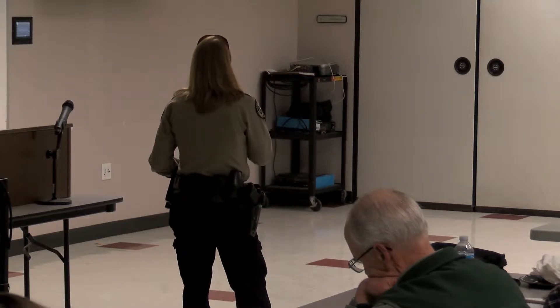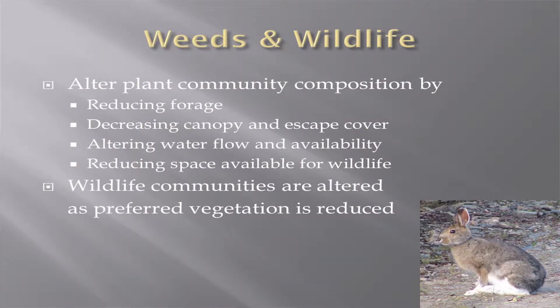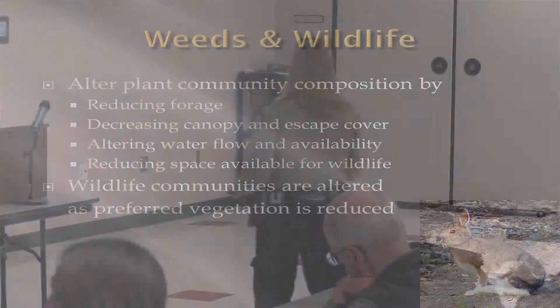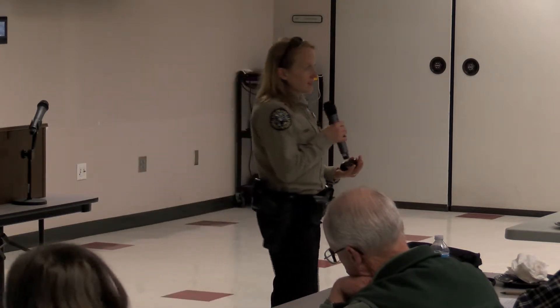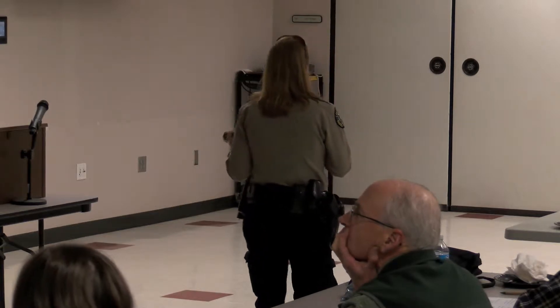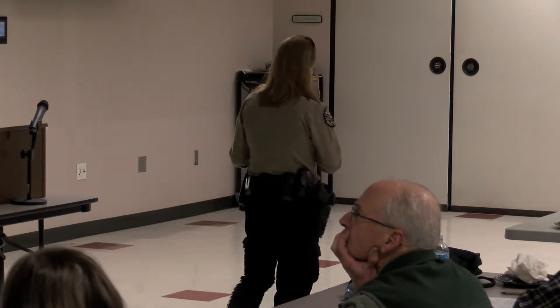Weeds also alter plant community composition by reducing forage, decreasing canopy and escape cover, altering water flow and availability, and reducing space available for wildlife — so we're affecting all four components again. These wildlife communities are altered as preferred vegetation is reduced. Think about what it is that wildlife really want to seek out, and if they can't get it because weeds are infesting an area, they're going to move along.